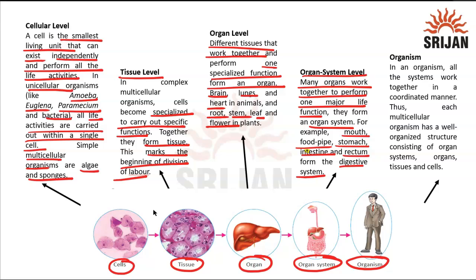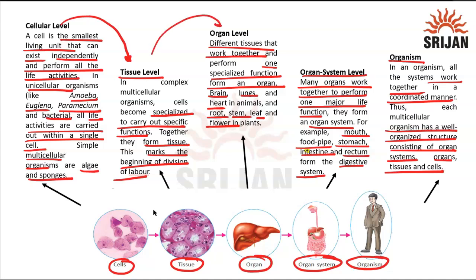For the digestive system, it starts with the mouth, then the food pipe, stomach, intestine, and rectum. In humans we have nine systems — digestive, excretory, reproductive, skeletal, muscular, and more — all working together in a coordinated manner to form the organism, which has a well-organized structure consisting of organ systems, organs, tissues, and cells. This organism then interacts with its environment to survive. That is how organization works — from one level to the next, following a proper hierarchical order going from smaller to higher.